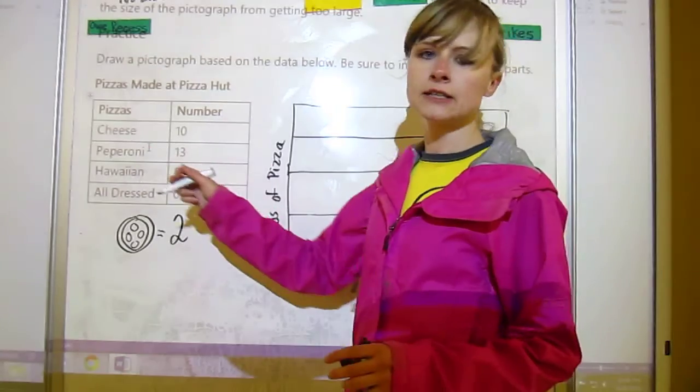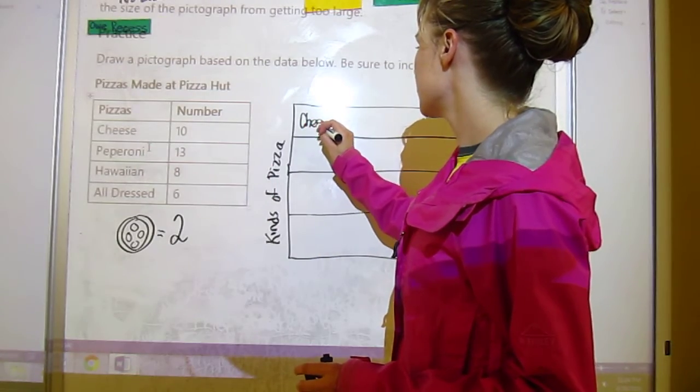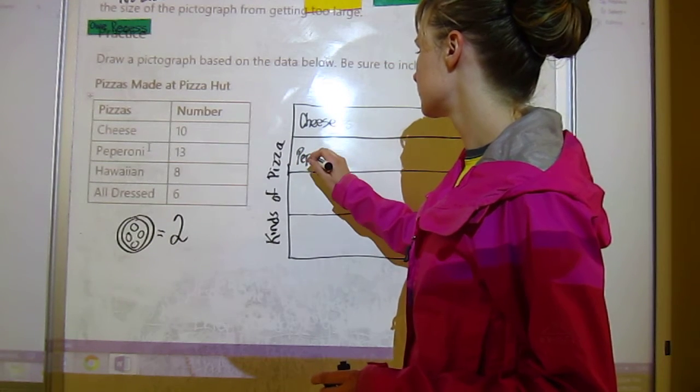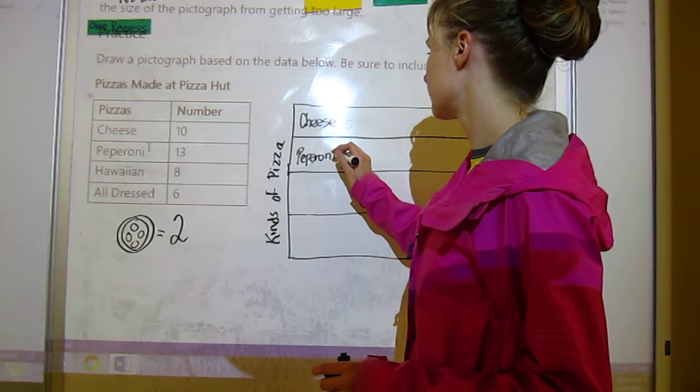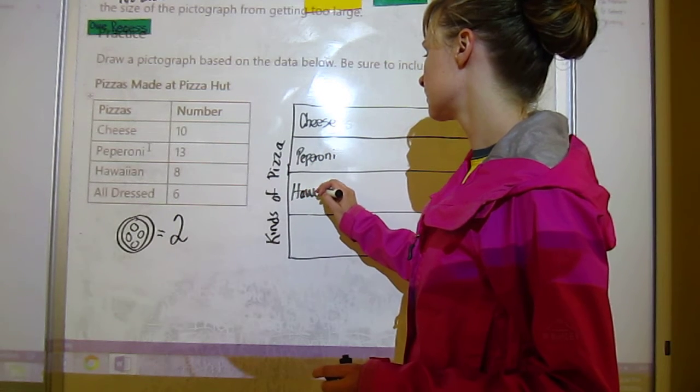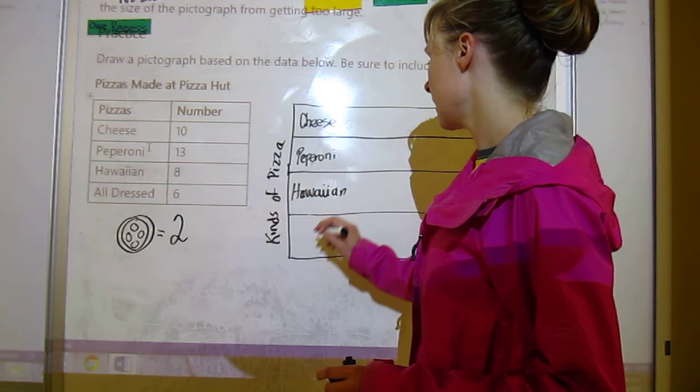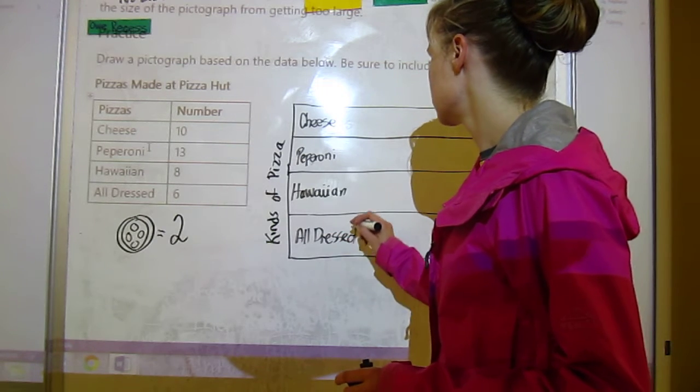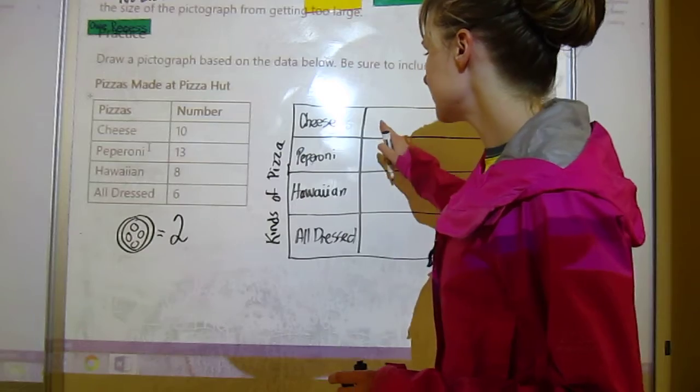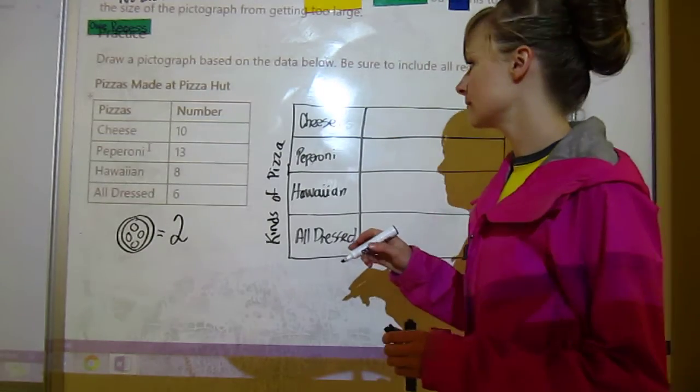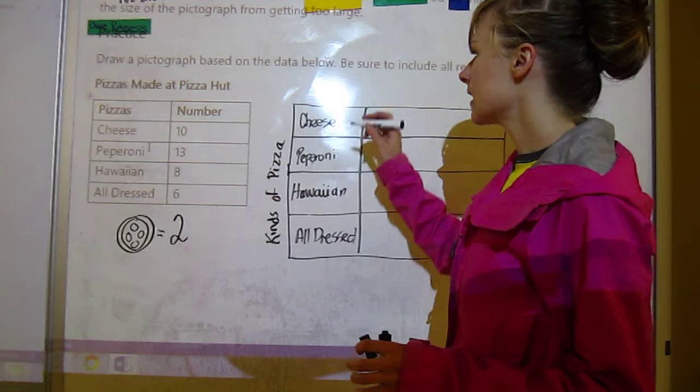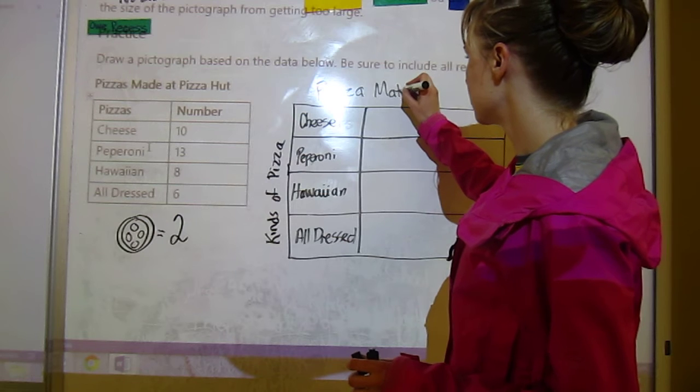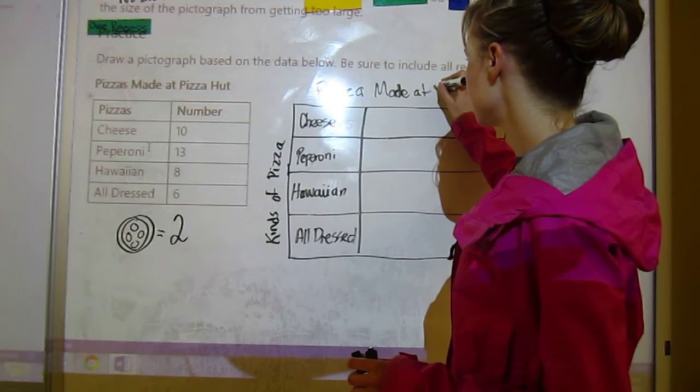Then we need to put in the kinds of pizza. We've got our cheese, we've got our pepperoni, we've got our Hawaiian, and we've got our all dressed. Usually we draw a line to divide so that we can start all our pizzas at the same spot. We need to remember our title: pizzas made at Pizza Hut.